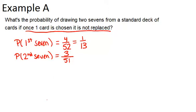So these two events are dependent because these two probabilities are different. If the two events were independent, those probabilities would be the same no matter what.